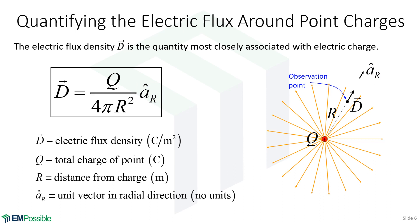That lets us calculate the overall electric flux density D, which has units of Coulombs per meter squared. Notice Coulombs is in the units for the electric flux. The electric flux is most closely associated with charge, so that should really be the first thing you calculate around a charge — the electric flux.